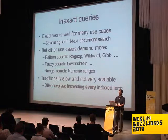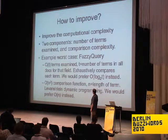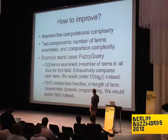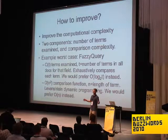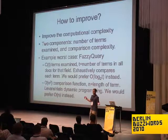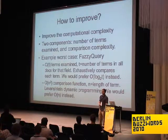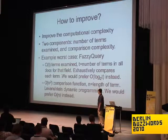What we want to do is improve this by improving the complexity. With a fuzzy query, there are two reasons it's slow: it examines too many terms, and the comparison itself is slow. It would exhaustively look at all terms in that field, so as you add more documents, queries get slower. We'd prefer logarithmic time rather than linear. For the comparisons, the Levenshtein dynamic programming algorithm is very slow — it would be better to have something like linear time where you just run the string through and it either matches or not.